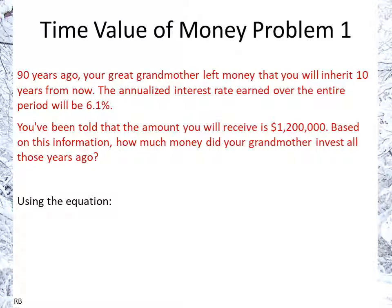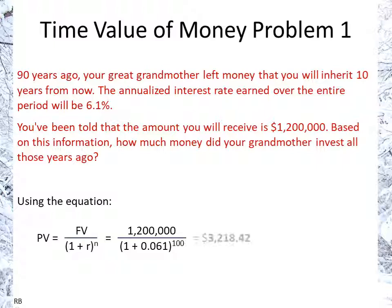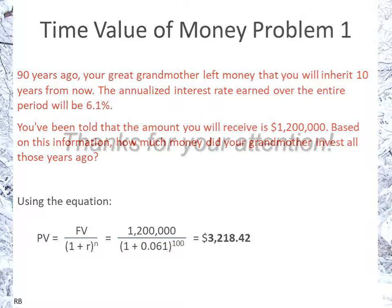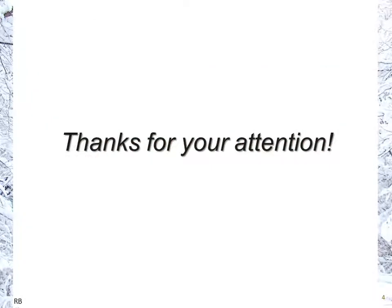We can also use the equation: present value equals future value divided by (1 plus the rate) to the power of N, where N is the number of periods. Putting in the values — $1.2 million, 6.1%, 100 years — it comes out to the same number. And there we have it. Thank you for your attention, and I hope that helped.